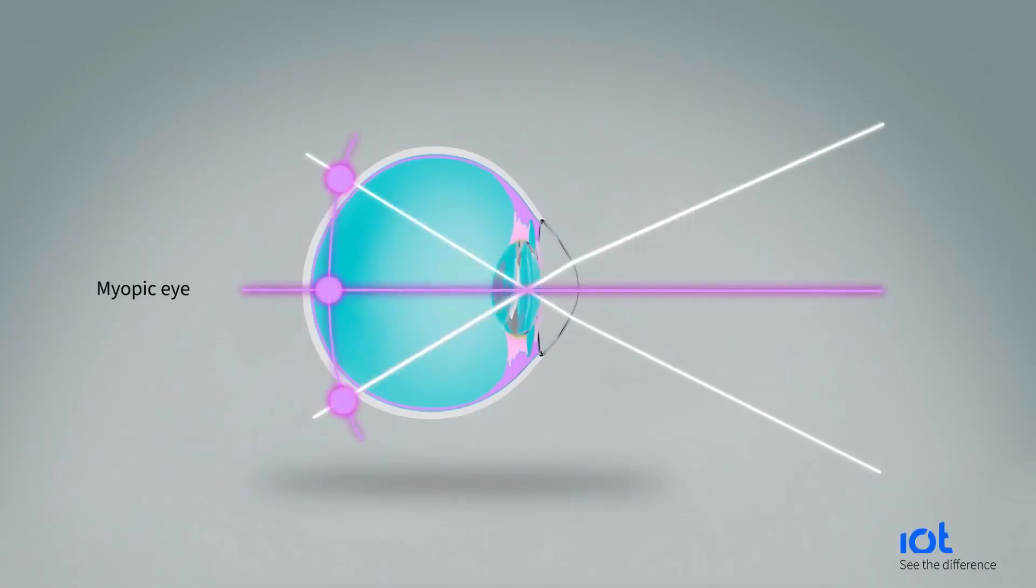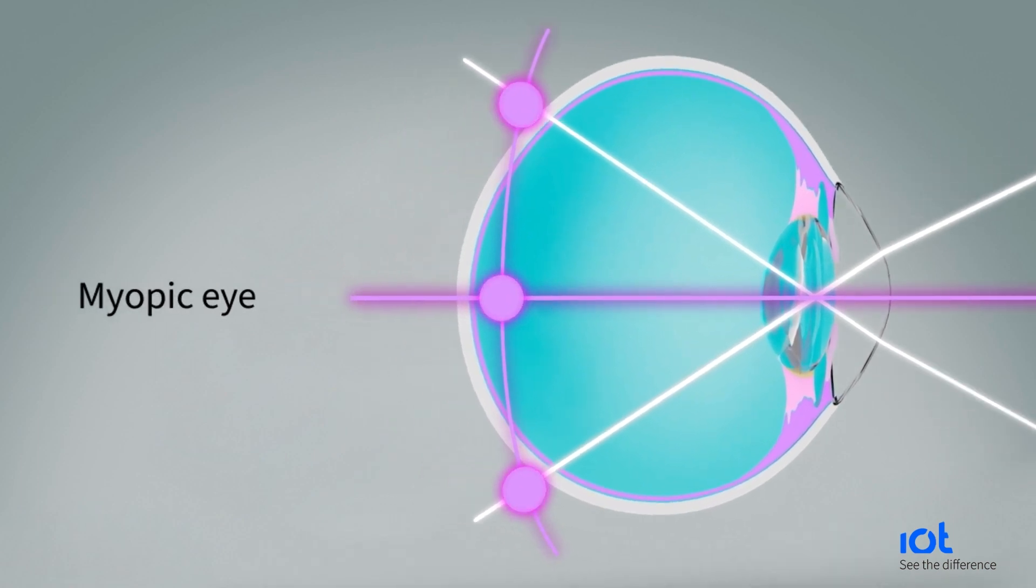In the myopic eye, rays of light converge in front of the retina, causing blurry distance vision.